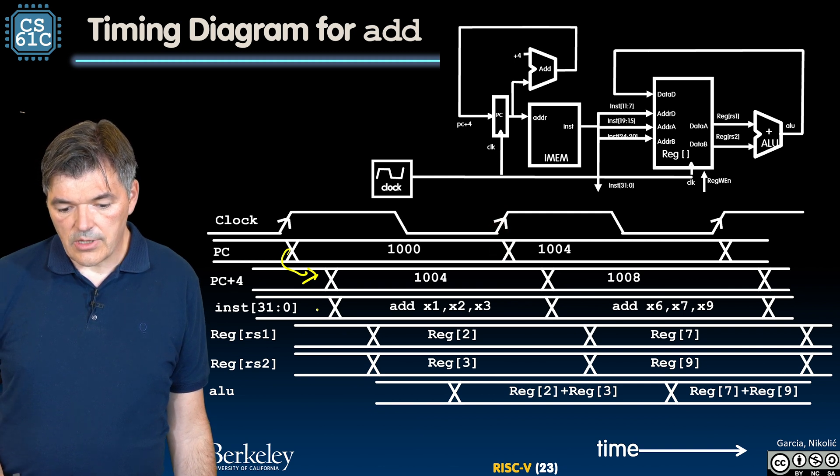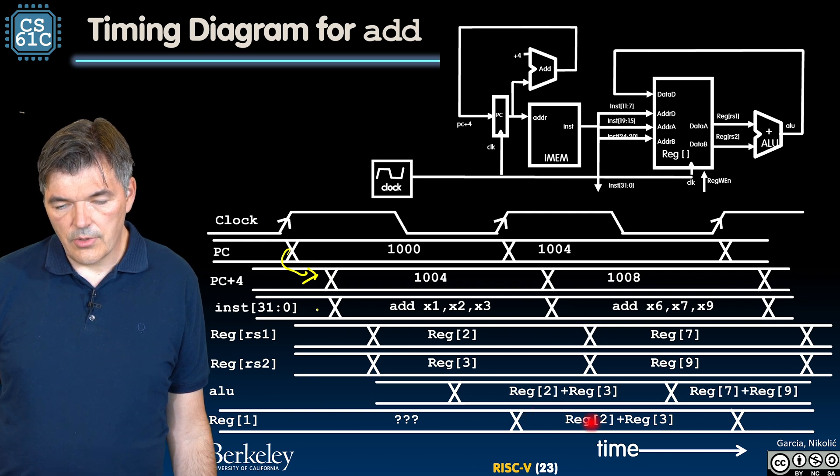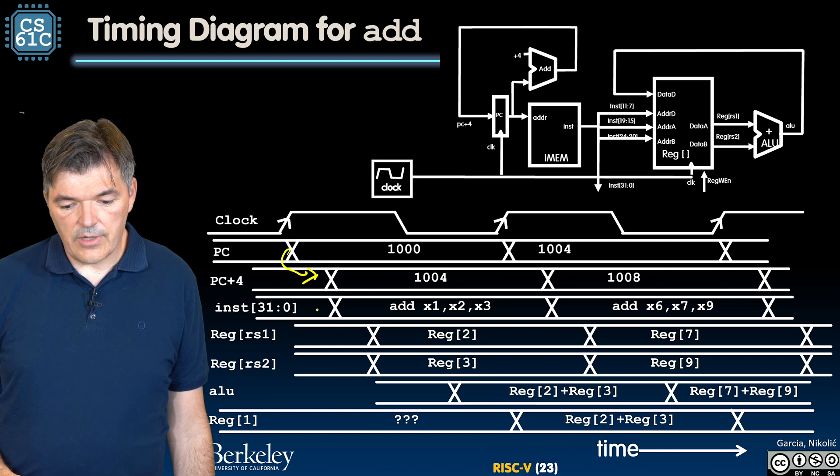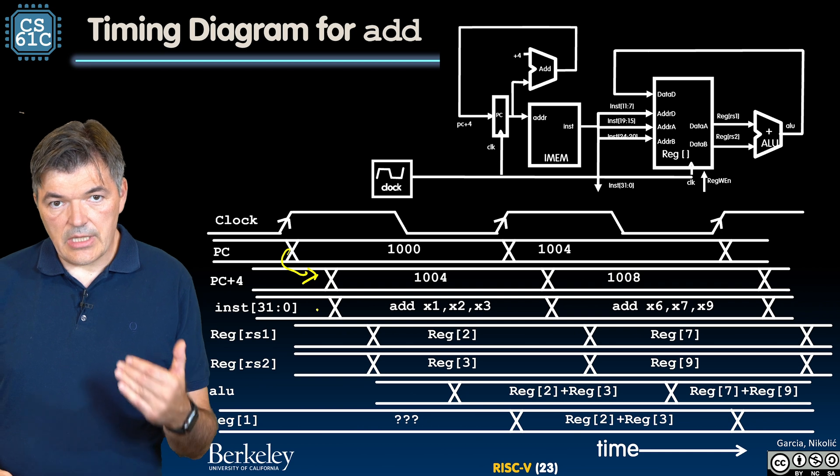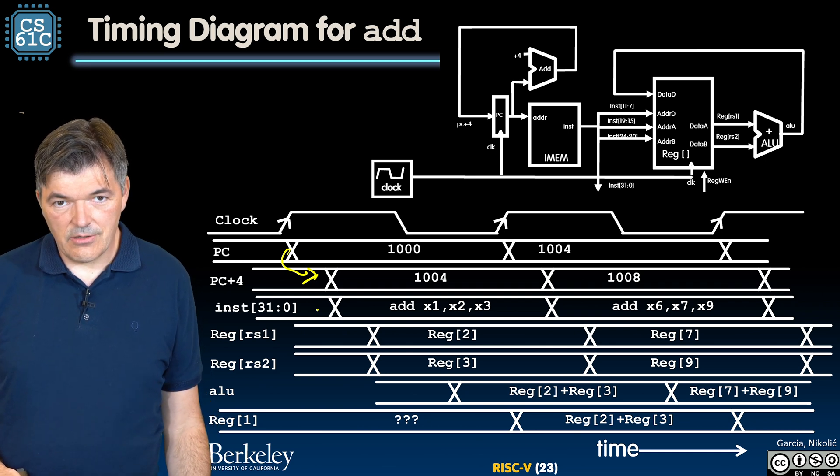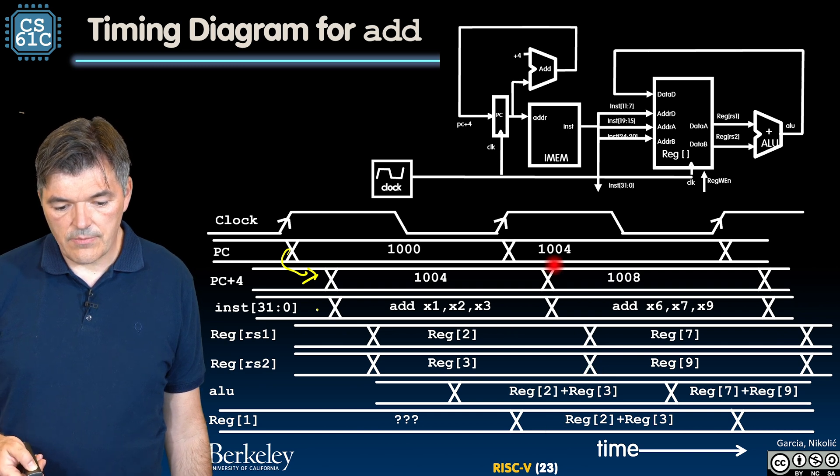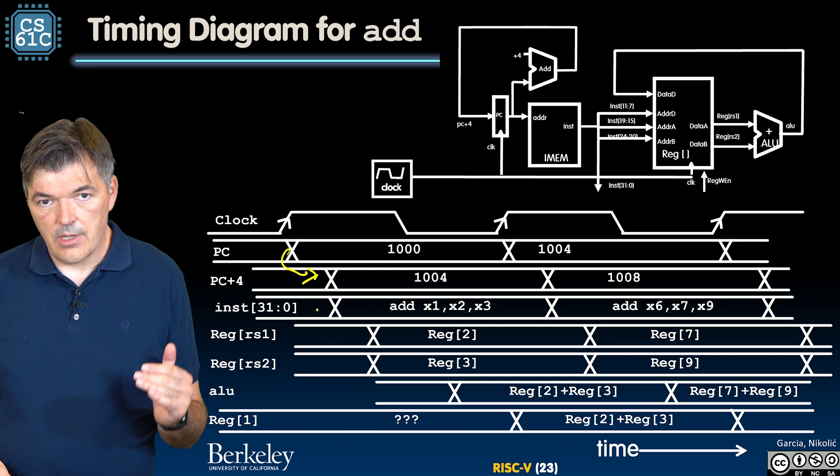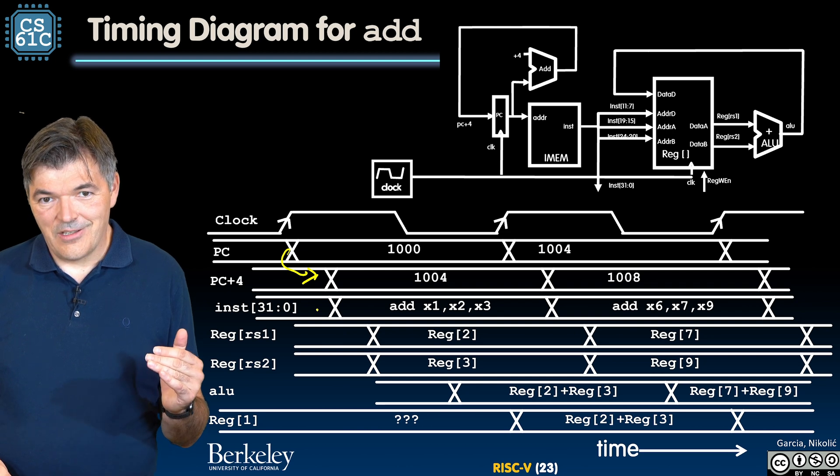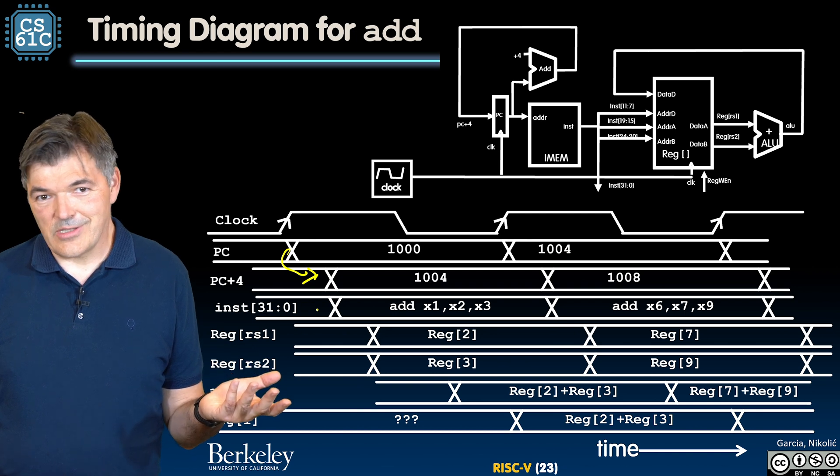So the next rising edge of a clock, we store the values of reg2 and reg3 into the register file. Simultaneously, as we are updating that value in the register file, that's when we are writing the new address into the program counter, 1004, and we are continuing to execute the next instruction in the same order.